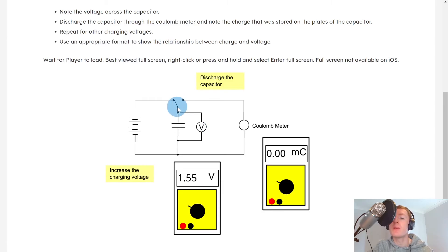Then what you would do is discharge the capacitor by moving the switch to here, and that is going to discharge through the coulomb meter, and we would then note down the charge that was stored in the plates of the capacitor. We would then repeat this for other charging voltages, and then use an appropriate format to show the relationship between charge and voltage, such as writing down your values in a table, and then plotting a graph from this table of results.